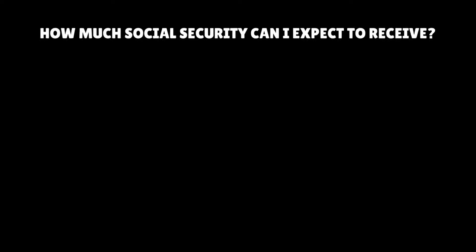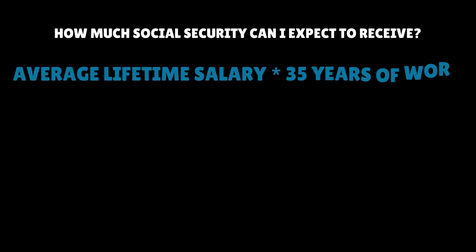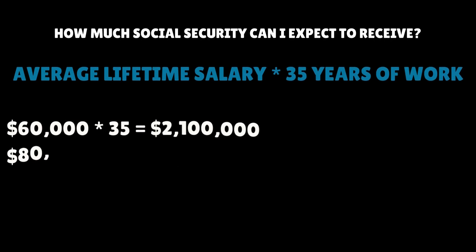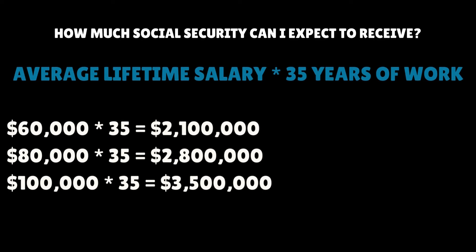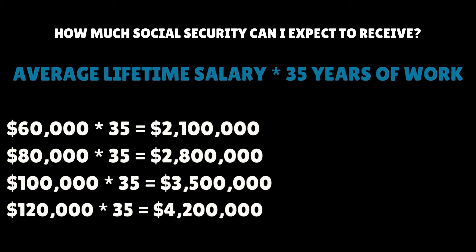You'll take whatever your average lifetime salary is and multiply it by 35. If your average lifetime salary was $60,000 per year, then you'll have $2.1 million. If it was $80,000 per year, you'll have $2.8 million. If it was $100,000 a year over 35 years, you'll have $3.5 million. And if your average lifetime salary was $120,000 per year, then you'll have $4.2 million. All we did is take your inflation-adjusted average lifetime salary and multiply it by 35.